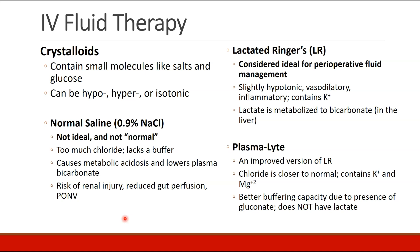A third crystalloid you may see is called Plasmalyte, an improved version of lactated Ringers. In Plasmalyte, the chloride is even closer to normal. It contains potassium and magnesium, and it has better buffering capacity due to the presence of gluconate. Plasmalyte does not have lactate, and therefore patients who have liver injury or liver transplant would be able to manage this fluid better than lactated Ringers.